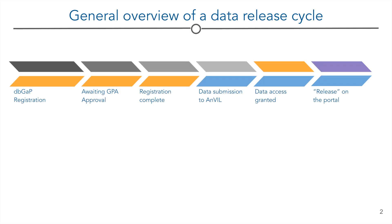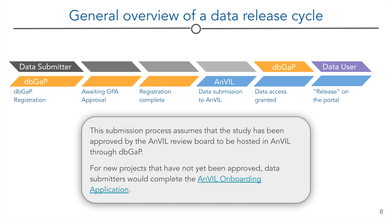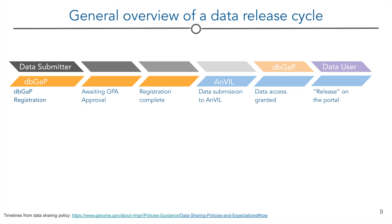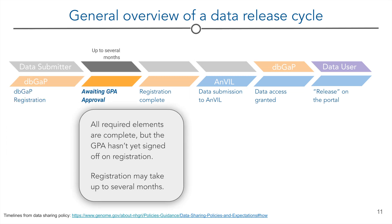In the upcoming slides, note the colours of this image and the relationship between the groups. Grey is the activity of the data submitter. Orange is dbGaP. Blue is the Anvil ingestion team. And purple is the data user. Note that this submission process assumes that the Anvil review board has approved the study to be hosted in Anvil through dbGaP. For new projects that have not yet been approved, data submitters would complete an Anvil onboarding application. The first three steps are where the data submitter works with dbGaP to register the study. The journey starts with the data submitter reaching out to dbGaP and registering the study. The registration process requires approval by the genomic programme administrator. Registration may take several months.